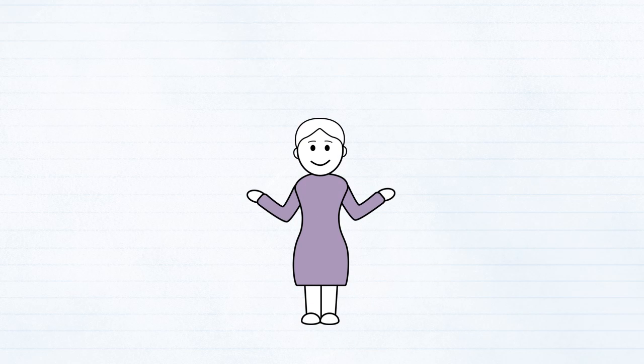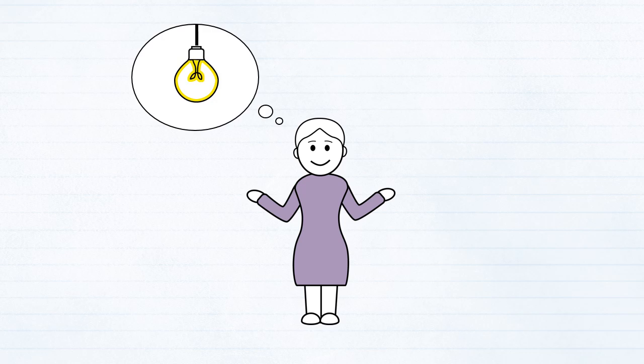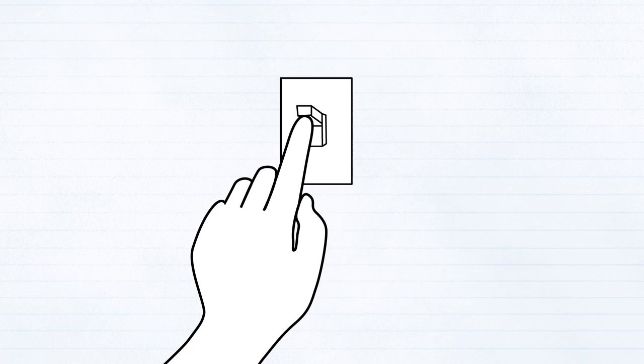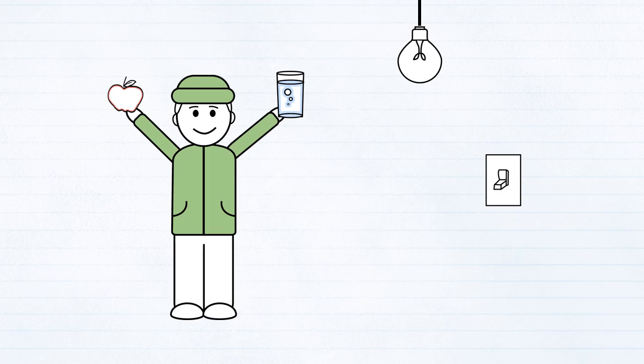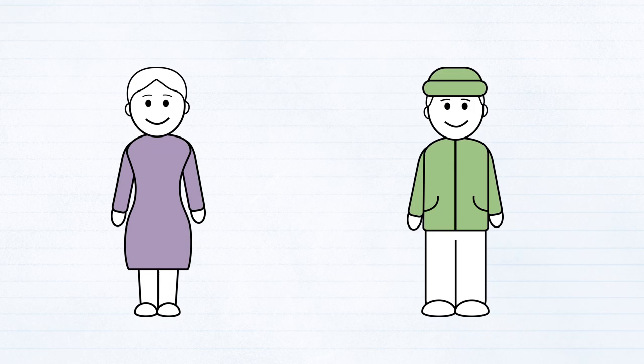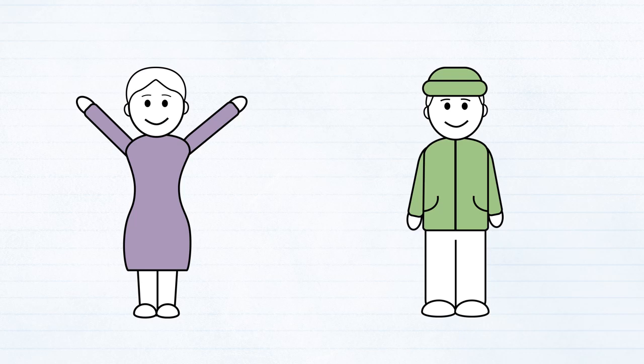This is Mary. She knows the room has a light and electricity. So she finds the light switch and turns it on. Now Joe won't be cold or hungry anymore, and he can turn on the light himself whenever he wants to. Mary feels really good about helping Joe, and Joe is very happy to be able to help himself.